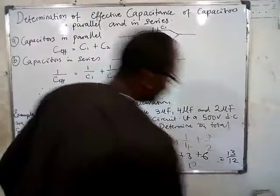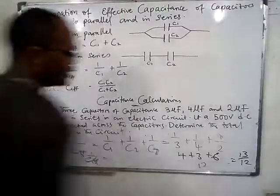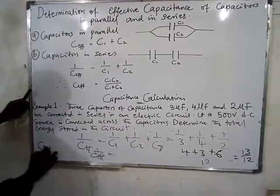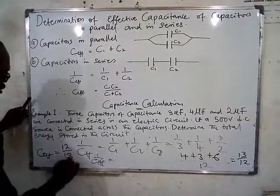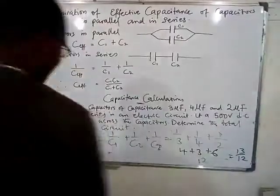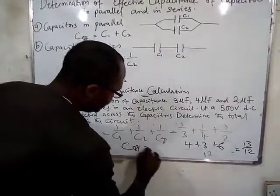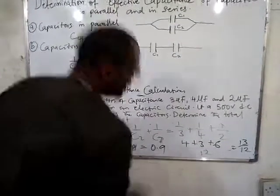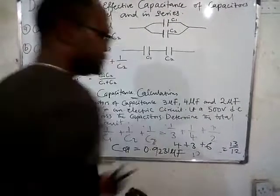So 1 over C_eff equals 13 over 12, which means effective capacitance equals 12 over 13. The value of 12 over 13 — press your calculator — is 0.9231 microfarad. So the effective capacitance C equals 0.9231 microfarad.